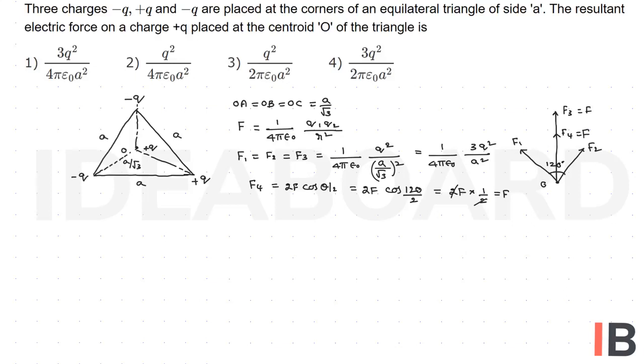Which is equal to 2F, 2 into, so F value, we know this is 1 by 4 pi epsilon 0, 3Q square by A square.